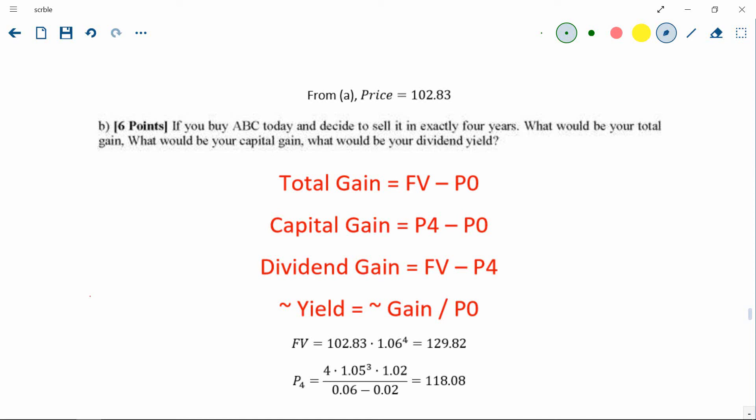Here we are given the price of the stock and we are asked if we are to sell this stock in four years, what would be the capital gain, the dividend yield and all those other stuff. So there are three formulas that you need to remember. And after that, it just becomes calculating the future value and the price at time four.